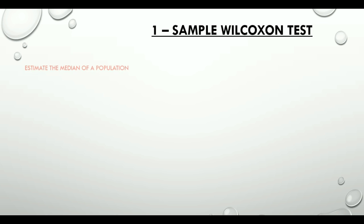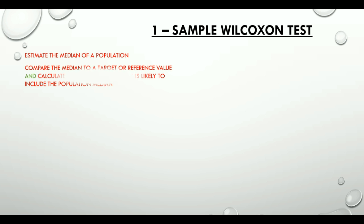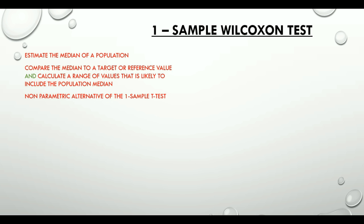One sample Wilcoxon test is used to estimate the median of a population. It compares the median to a target or reference value and calculates a range of values that is likely to include the population median. This is a non-parametric alternative of the one sample t-test.